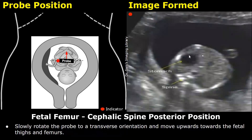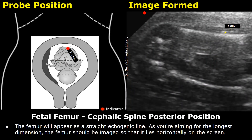Slowly rotate the probe to a transverse orientation and move upwards slowly. This image is at the level of the stomach, so keep moving upwards, which will lead you towards the fetal legs. When you start to see the fetal legs, try to locate the thigh — that is the femur — and rotate and angle the probe accordingly. You should get an image showing the femurs and the pelvis. The femur will appear as a straight echogenic line.